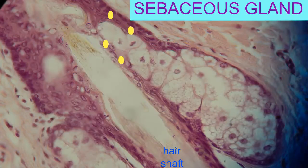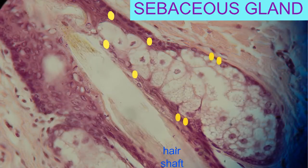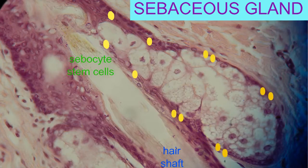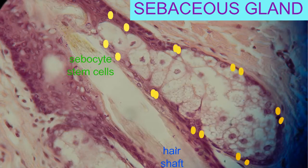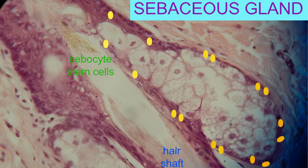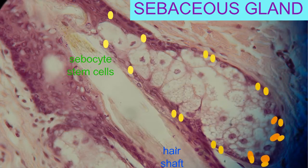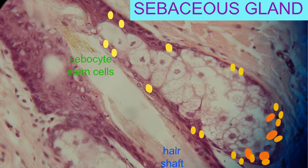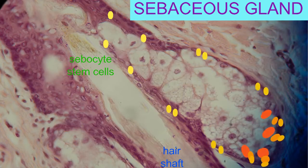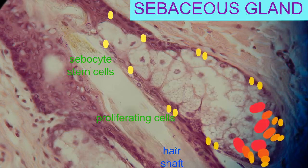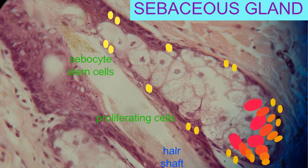Some of the keratinocytes associated with a hair follicle can differentiate into sebocyte stem cells. These divide and migrate, forming the proliferating cells of a sebaceous gland.